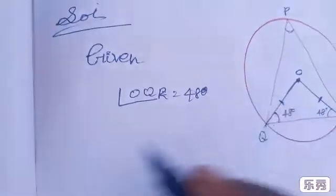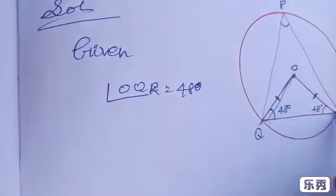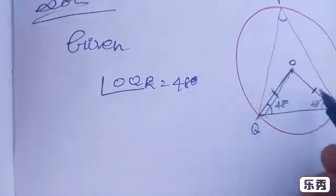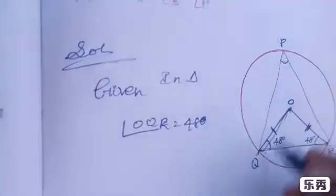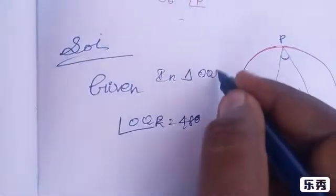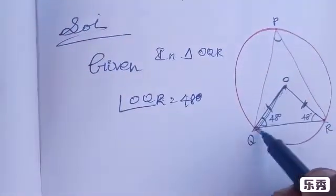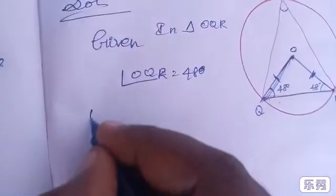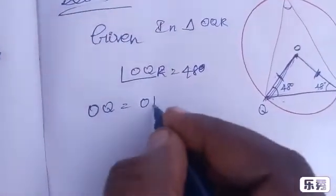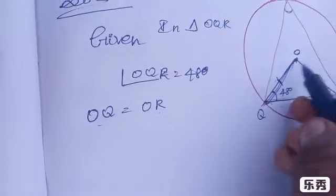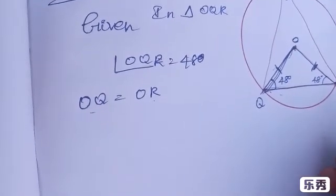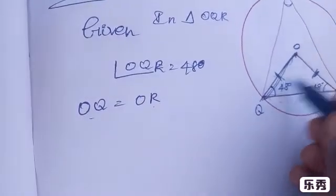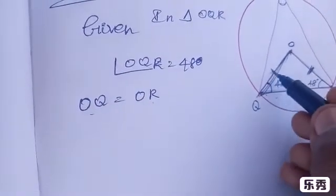Angle OQR is 48 degrees. OQ is equal to OR — these are the two equal sides, making it an isosceles triangle. Because two sides are equal, this is called an isosceles triangle. Therefore angle OQR equals angle ORQ, both equal to 48 degrees.